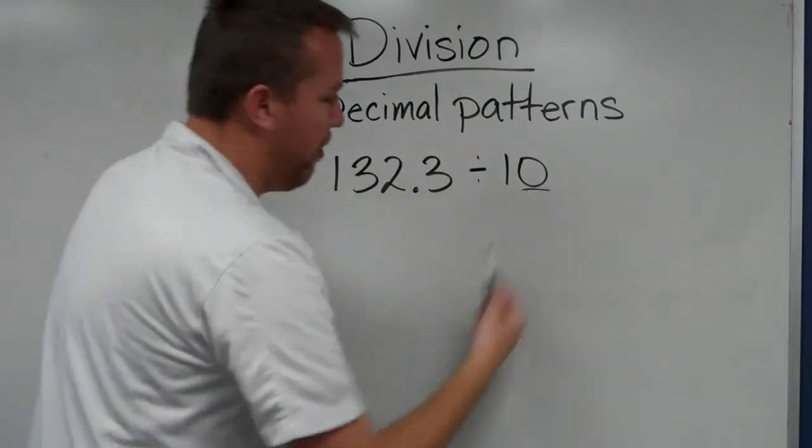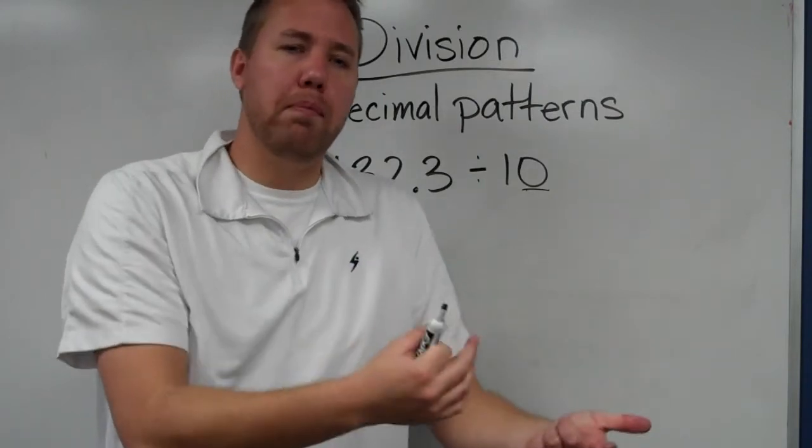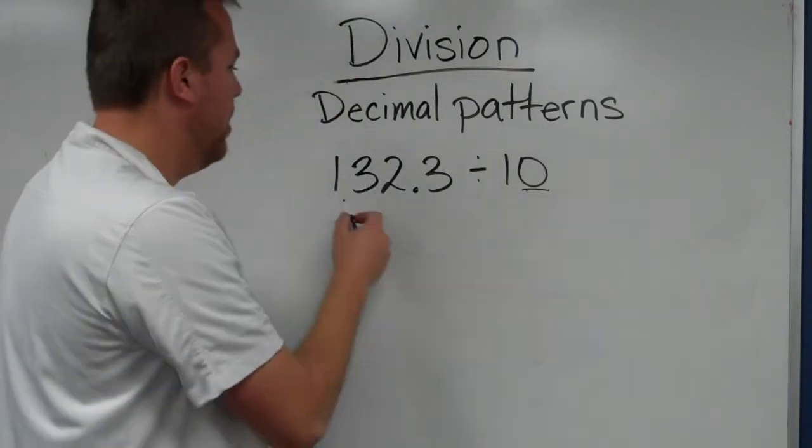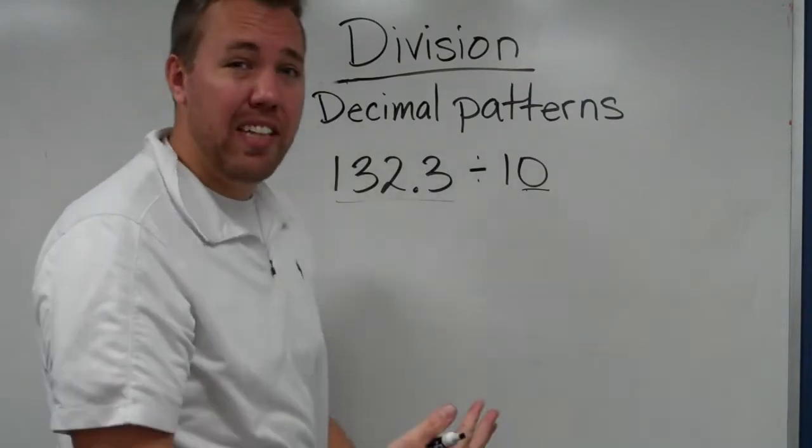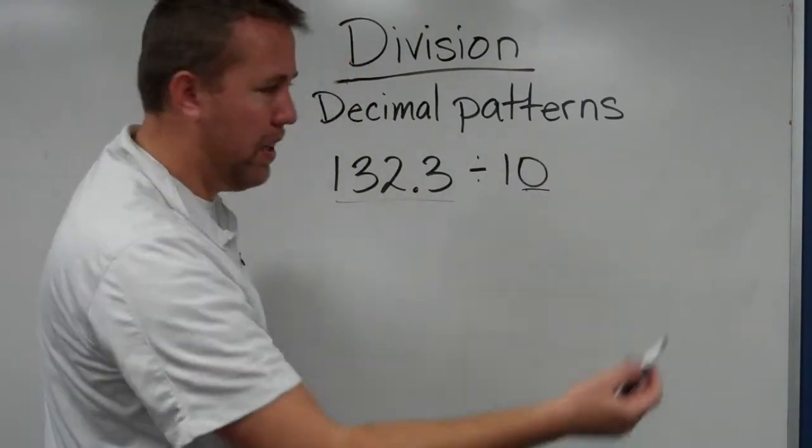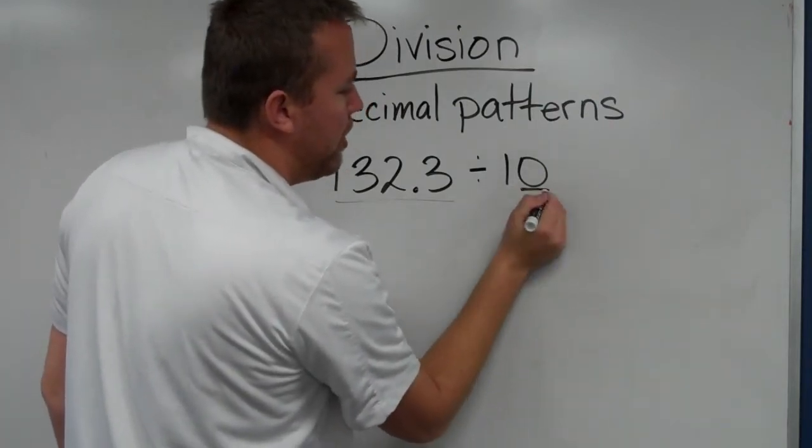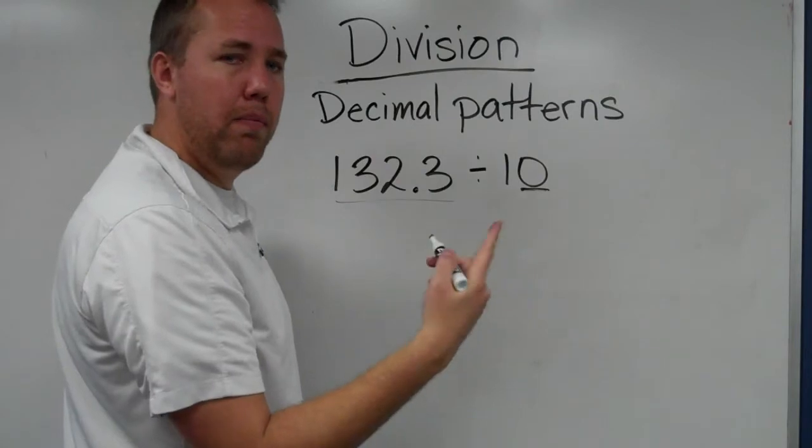So 132.3 divided by ten. If we are dividing by a number bigger than one, the dividend has got to get smaller. So 132 and something divided by ten. We know with ten, we're just dealing with one place value.